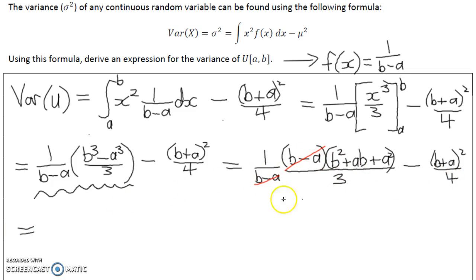So we're going to put them over 12, which would mean this one needs a 4. Let's expand as well. So it'll be 4b squared plus 4ab plus 4a squared. And we need to times the top and bottom of the other one by 3.